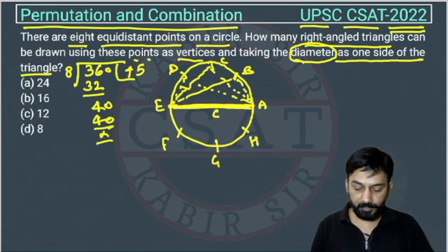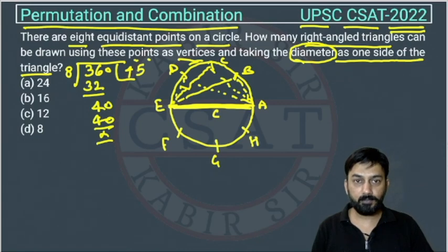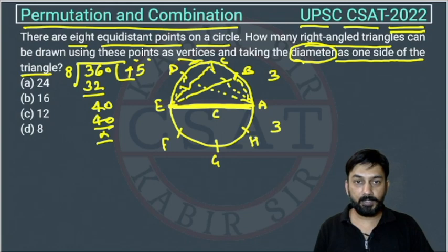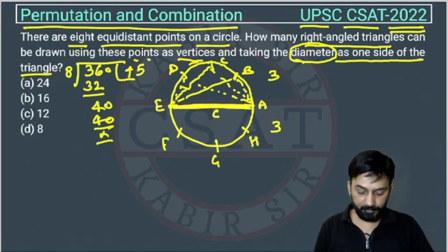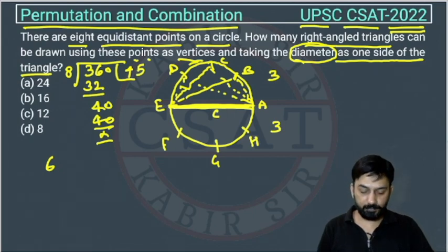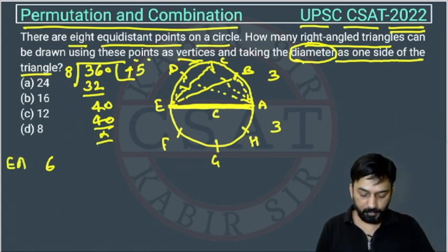We have three points on one side of the diameter and three points on the other side. So with those three points we can draw three right angle triangles on this side and three right angle triangles on that side, giving us six right angle triangles total when using EA as the diameter.